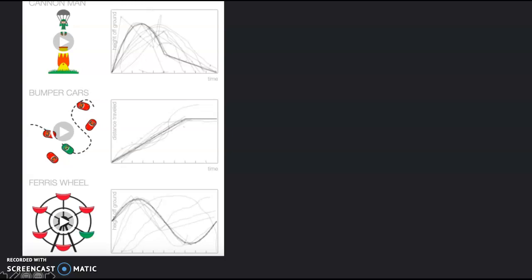For this second one, the bumper cars, the distance traveled was definitely a lot more uniform where it was steady. And then once the bumper cars crashed, the distance stopped, but time kept going. So it just became a straight flat line.